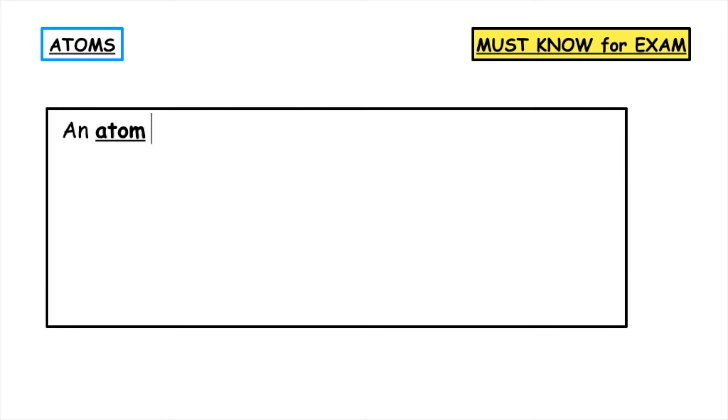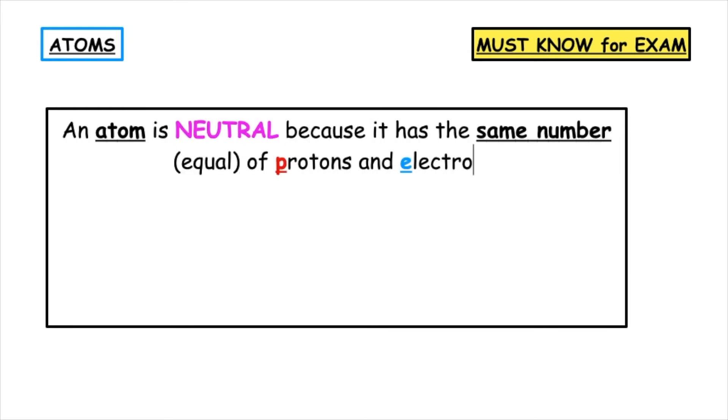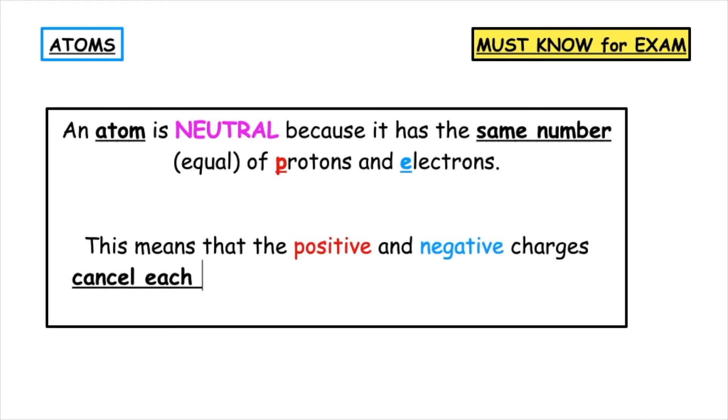An atom is neutral because it has the same number of protons and electrons. This means that the positive and negative charges cancel each other out, making them have no charge and therefore the atom being classed as neutral.